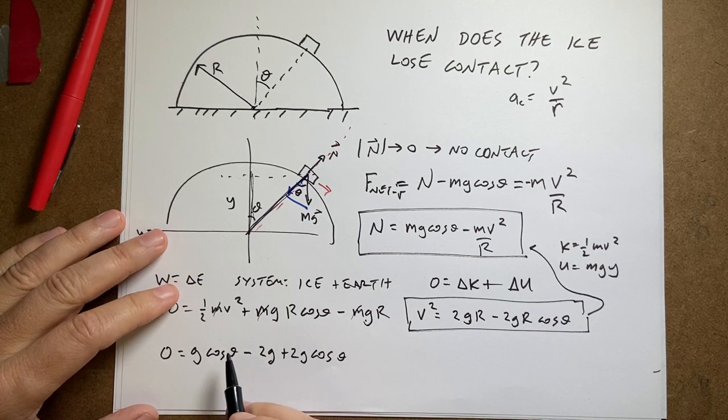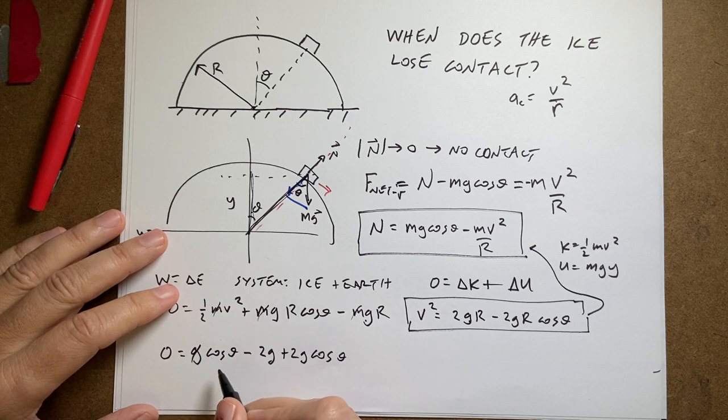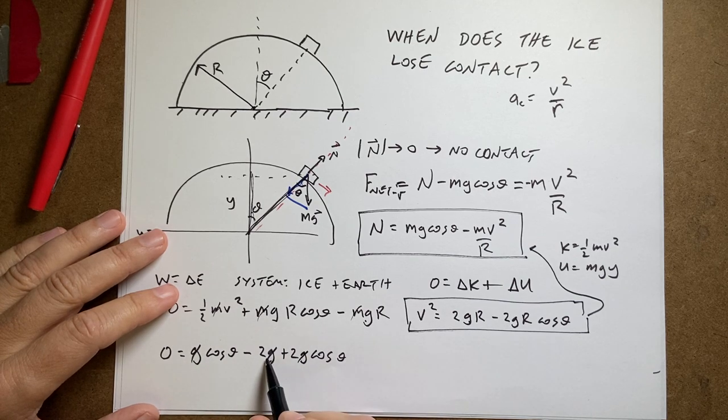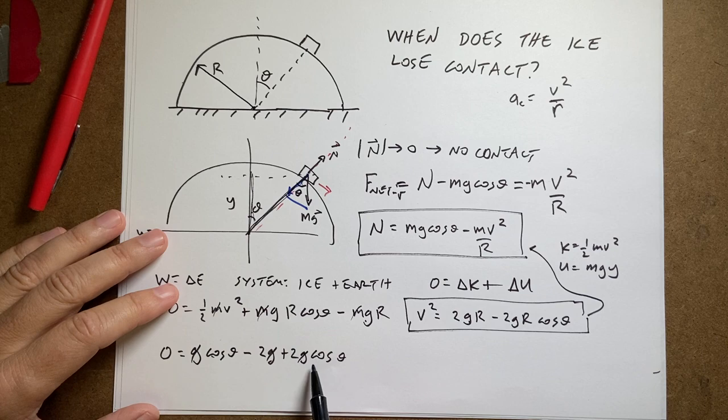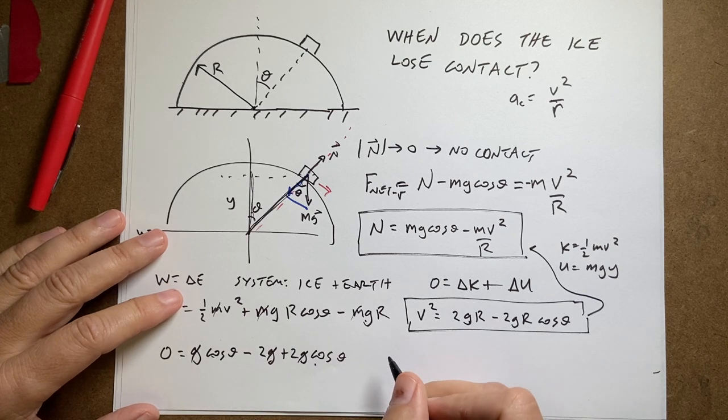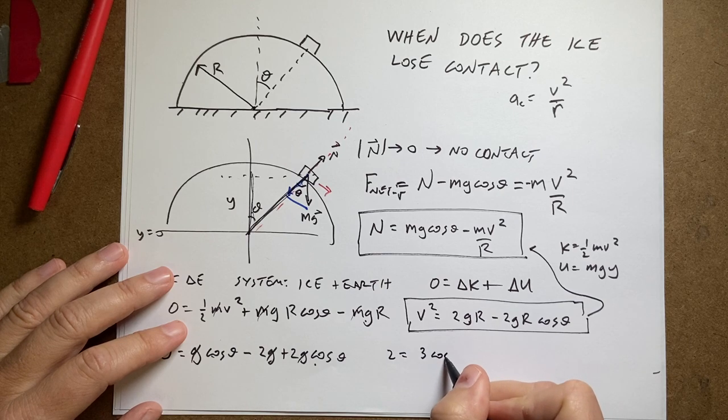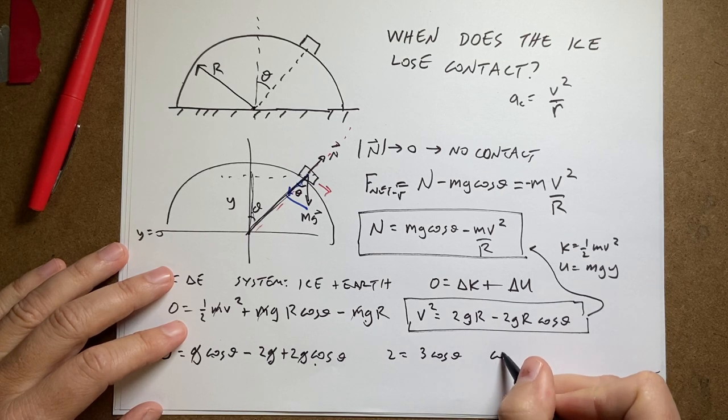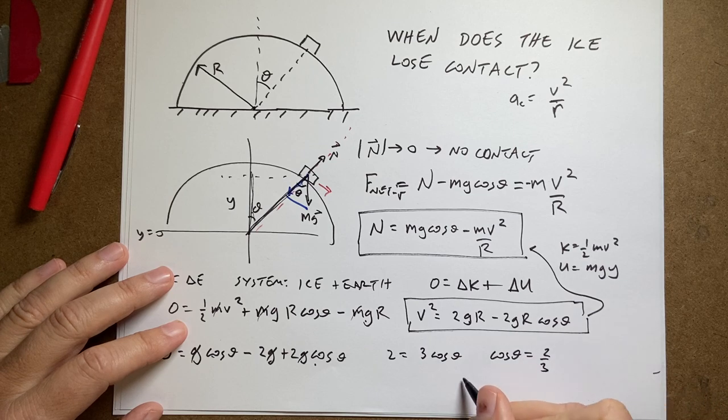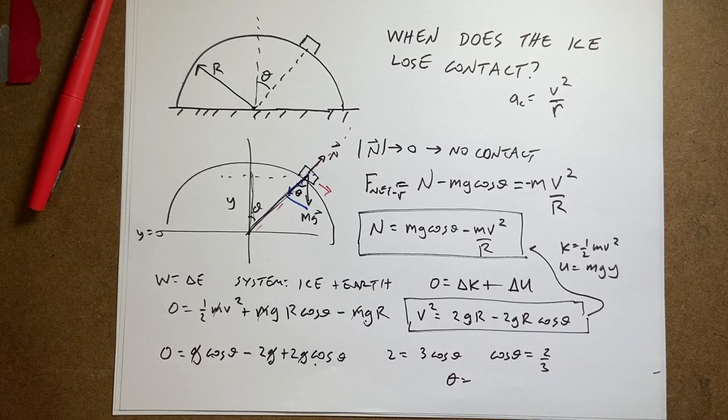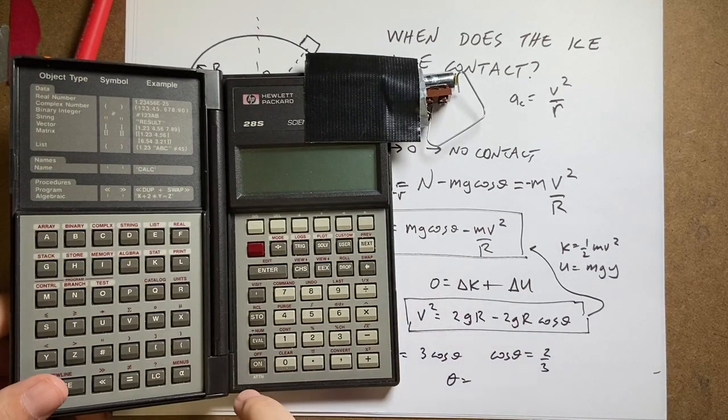I can add this. And I get 3. So I get 2 equals 3 cosine theta. Cosine theta equals 2 thirds. So theta equals calculator time.